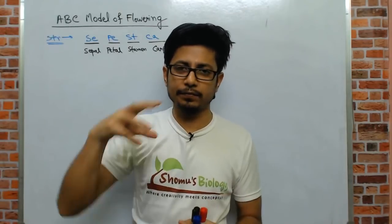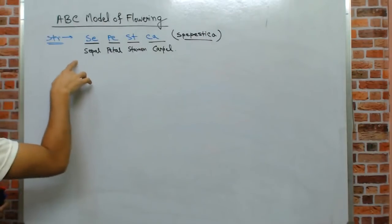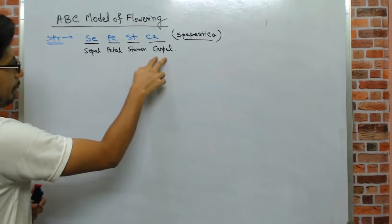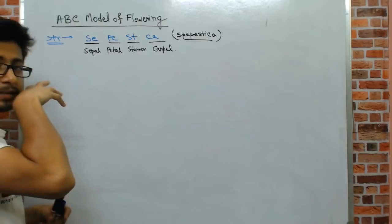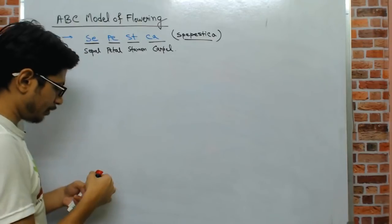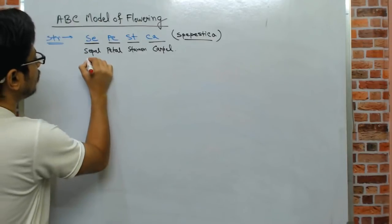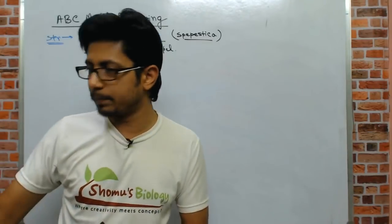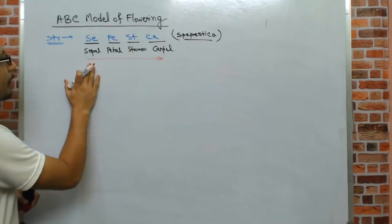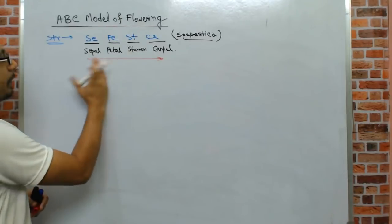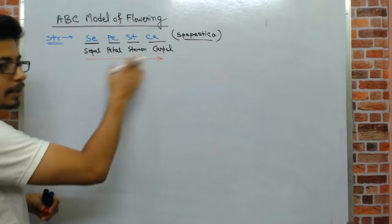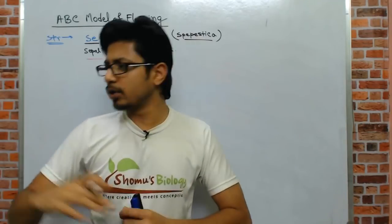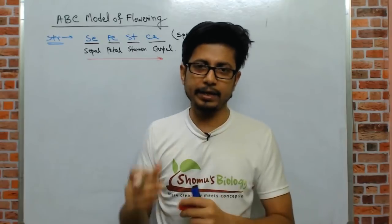If you think about the flower structure, these components are connected: sepal, petal, stamen, and carpel. This arrangement goes from the outermost region towards the innermost region — that's the sepestika order. Sepal is outermost, then petals, then stamen, then carpel. I'll show you a picture regarding this structure.